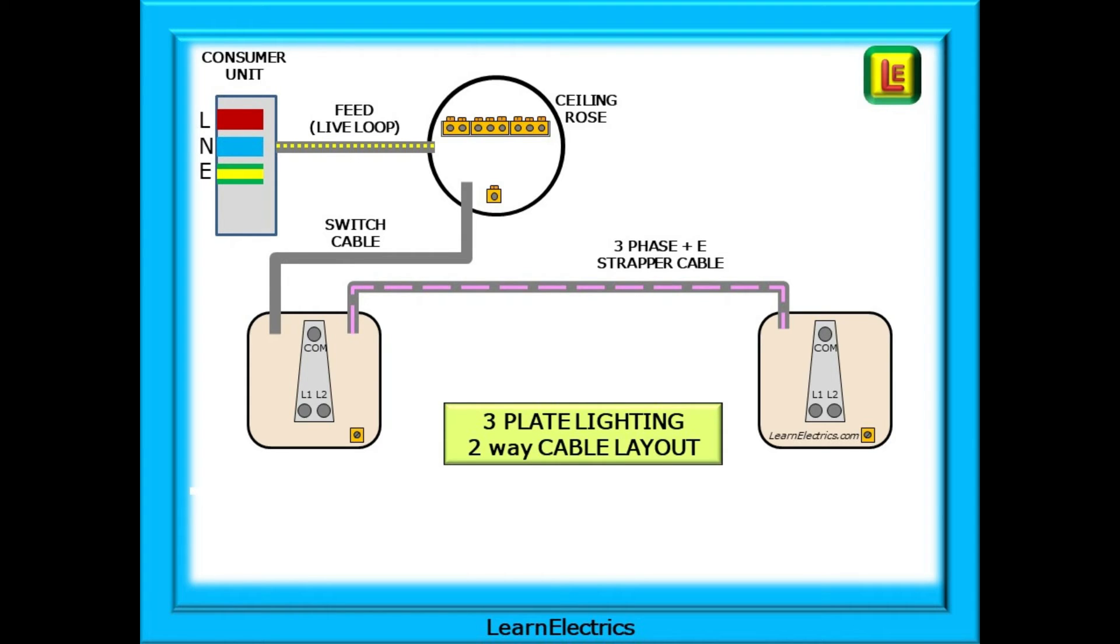A switch cable in plain grey is routed to the first switch, and lastly a strapper cable marked with purple dashes here goes between the two switches.